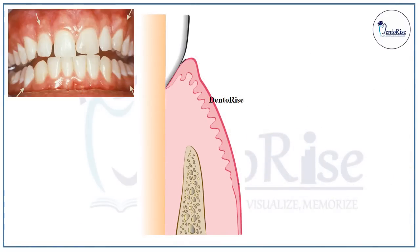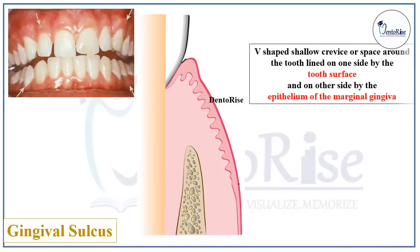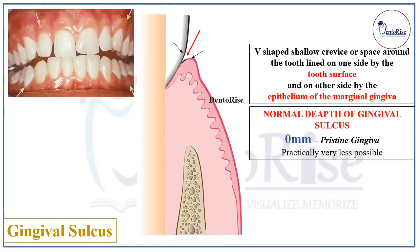Getting into the details of gingival sulcus: the gingival sulcus is a V-shaped shallow crevice or space around the tooth, lined on one side by the tooth surface and on the other side by the epithelium of the marginal gingiva, marked in the figure with a red arrow. Normally, the depth of gingival sulcus should be 0 mm; however, practically this is very less possible. Such gingiva is also called pristine gingiva, though again this is practically very less possible.